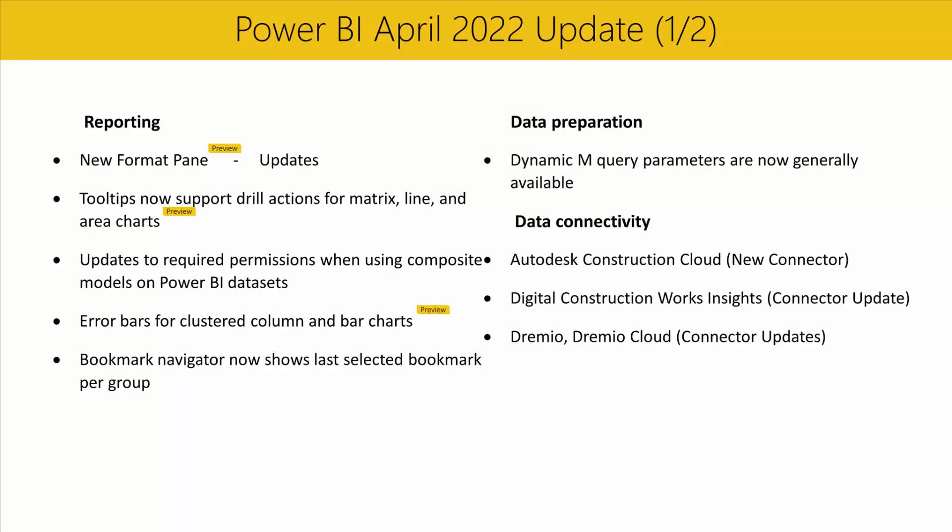Tooltips will now support drill actions for matrix, line, and area charts. Last year, we released a preview of a new visual tooltip which allows for data point drill down or drill through actions from the tooltip itself. The initial preview did not include drill support for some built-in visuals, but this month we've added the capability to the matrix, line, area, and stacked area charts. For more information on how to enable the preview feature, check out the documentation in the video description below.